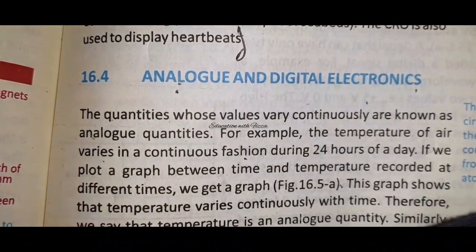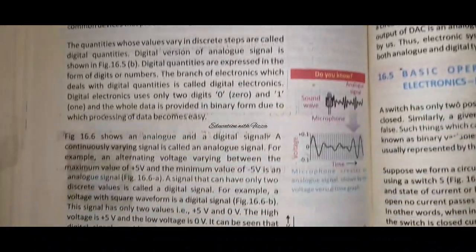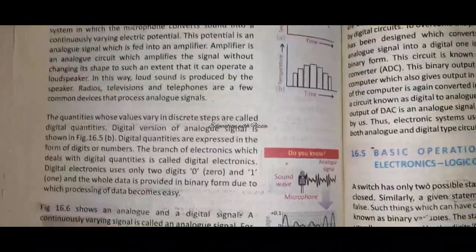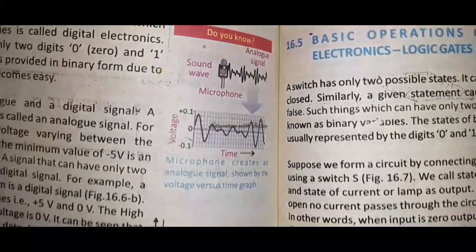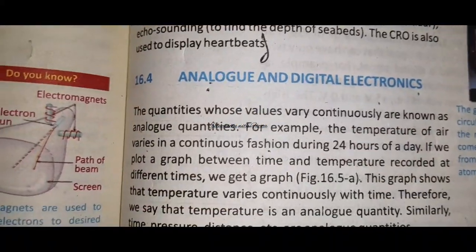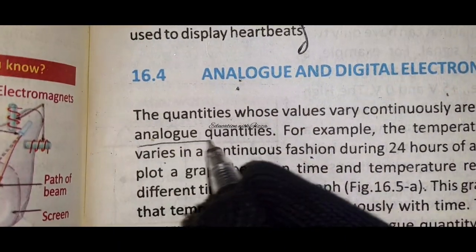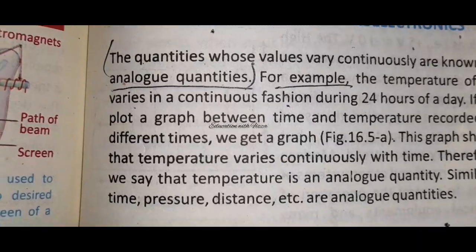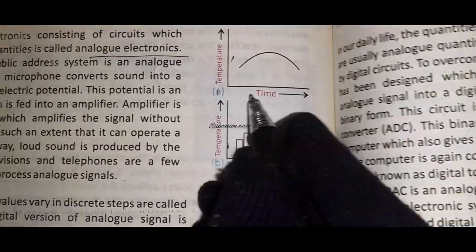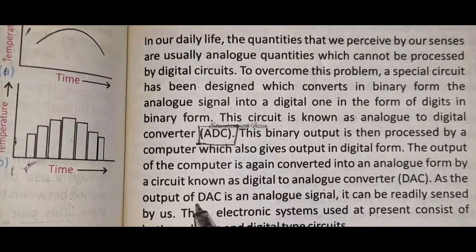Next topic is analog and digital electronics. This topic is very lengthy and most students feel it is so long that it seems important to skip. But I will tell you it is not something to skip. What you need to do here is learn a few definitions: analog quantities, an example of analog quantities, and then digital quantities. You also have to do the graph of analog values.